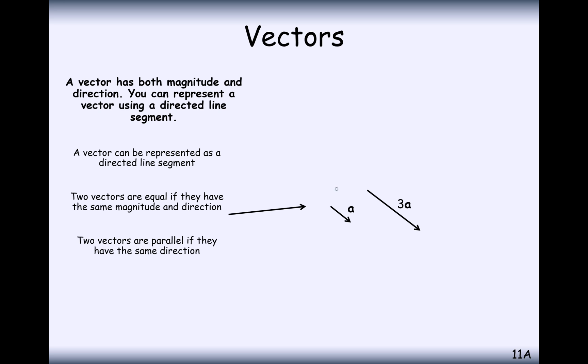The general way we write vectors is either in bold letters or underlined letters. Generally when you're writing on paper, you would write it with underlined letters because it's very difficult to write in bold.